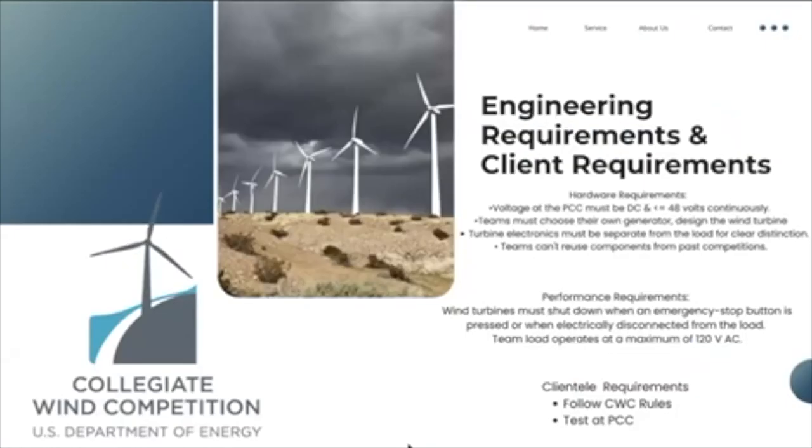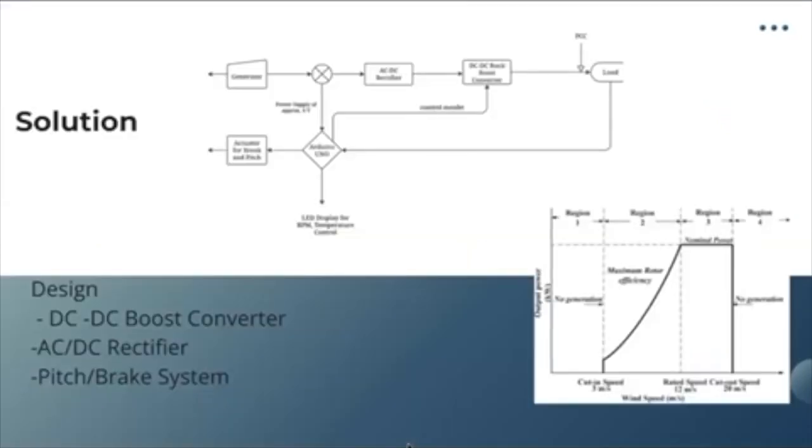So our engineering requirements and client requirements: our voltage at the PCC must be at or below 48 volts continuously and it also needs to have a braking system that can shut down if things go wrong. Our client requirements overall were to follow the CWC rules and test at PCC.